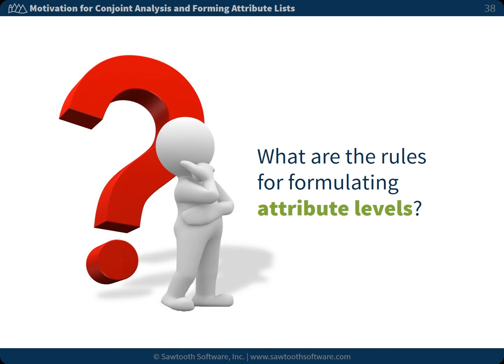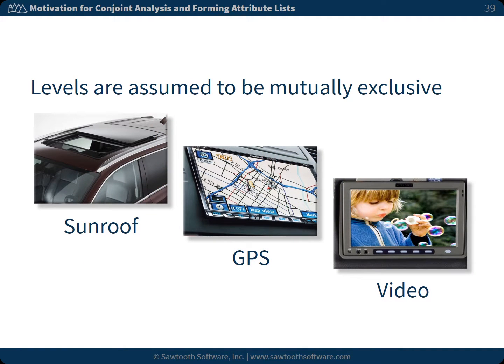What are the rules for formulating attribute levels? Levels are assumed to be mutually exclusive. For example, let's say you had an attribute called add-on features. You might create this single attribute with three levels: sunroof, GPS system, and video screen. But conjoint analysis assumes the levels are mutually exclusive and you cannot determine the value of providing two or three of these features at the same time. If you wanted to know how much respondents would like two or all three items, one solution is to create three separate attributes, each with two levels — available and not available — for the three options.